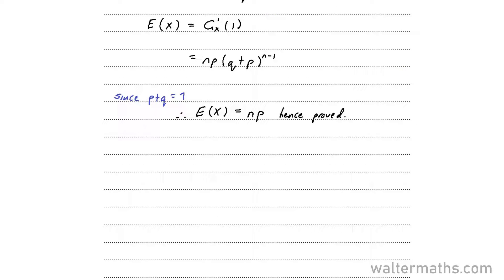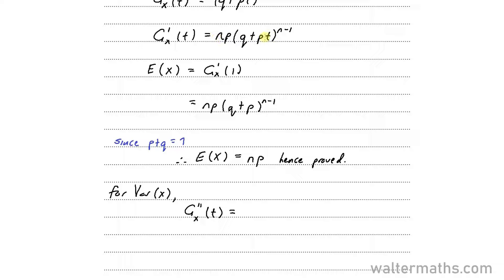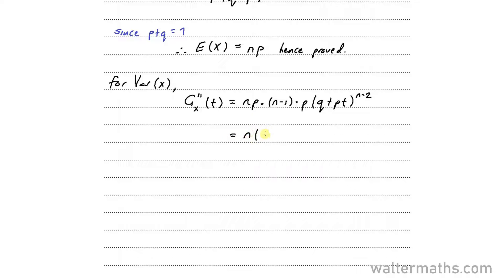For the variance, we need to find the second derivative, G double dash of T. The first derivative was NP times Q plus PT to the power of N minus 1. Differentiating again: bring down N minus 1, multiply by P, giving N of N minus 1 times P squared times Q plus PT to the power of N minus 2.